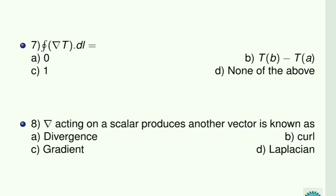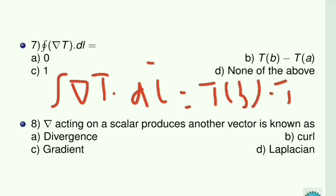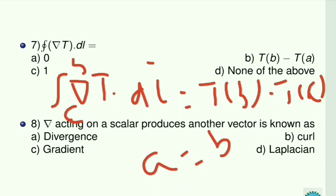Next: closed integral of ∇T · dL. Here ∇T is a vector and dL is also a vector. We know that the integral of ∇T · dL equals T(B) minus T(A) when integration goes from A to B. Now here they ask about the closed integral of ∇T · dL. Closed means the starting and end points are the same, so A equals B. If we substitute A equal to B in this equation, we get T(A) minus T(A) which equals 0. So the answer is A.